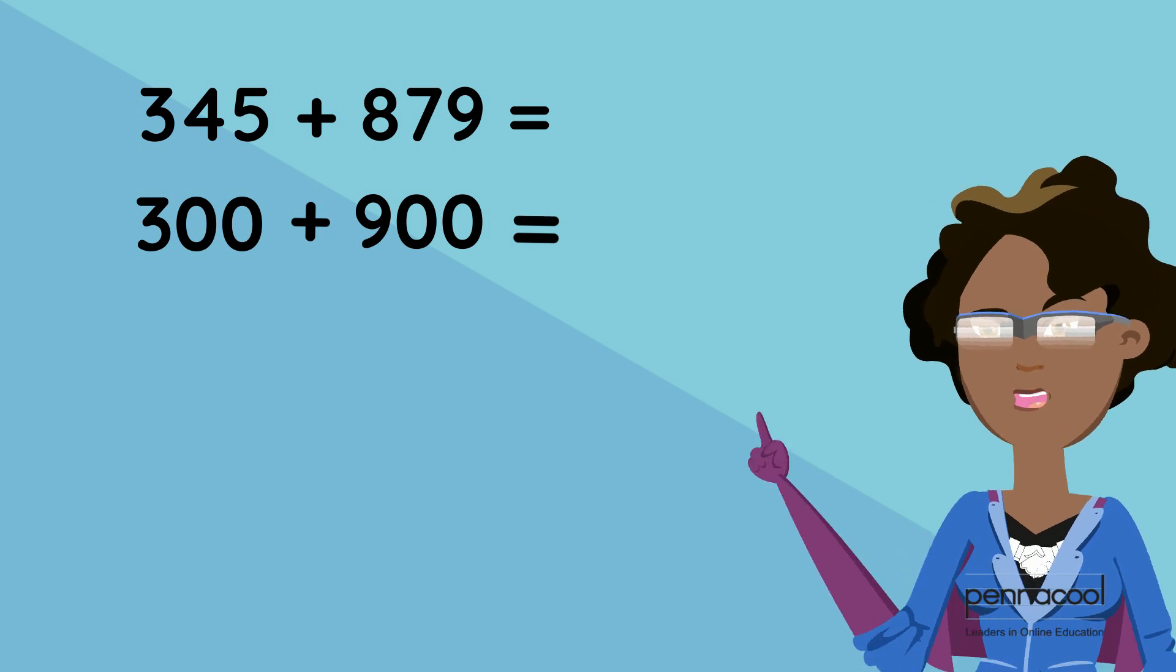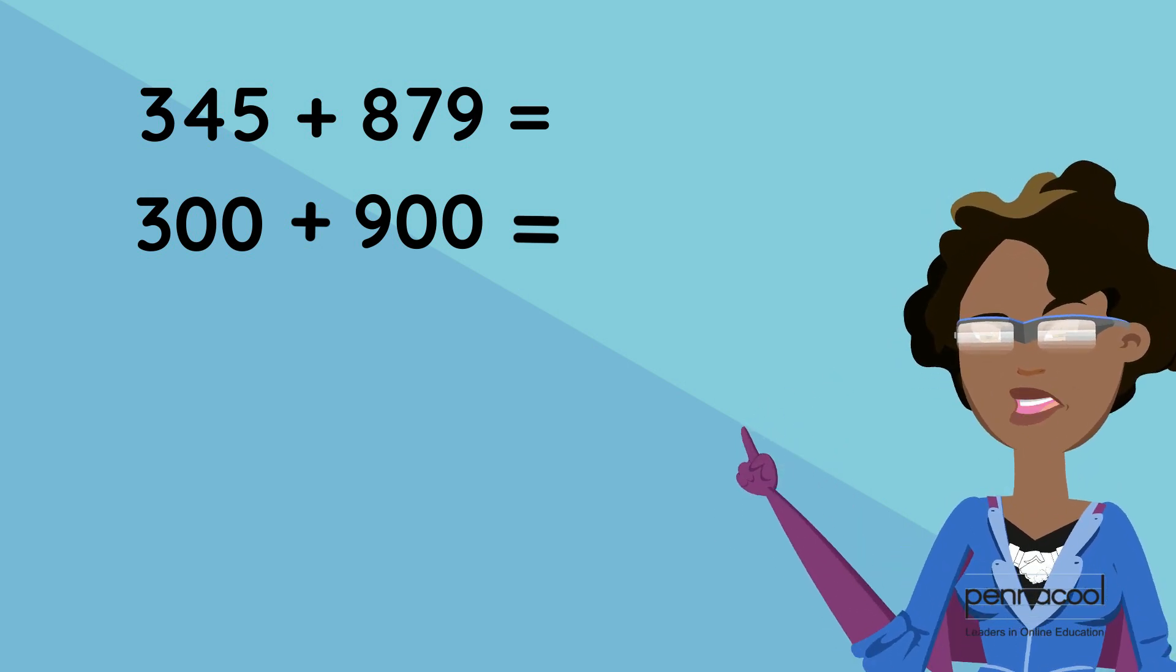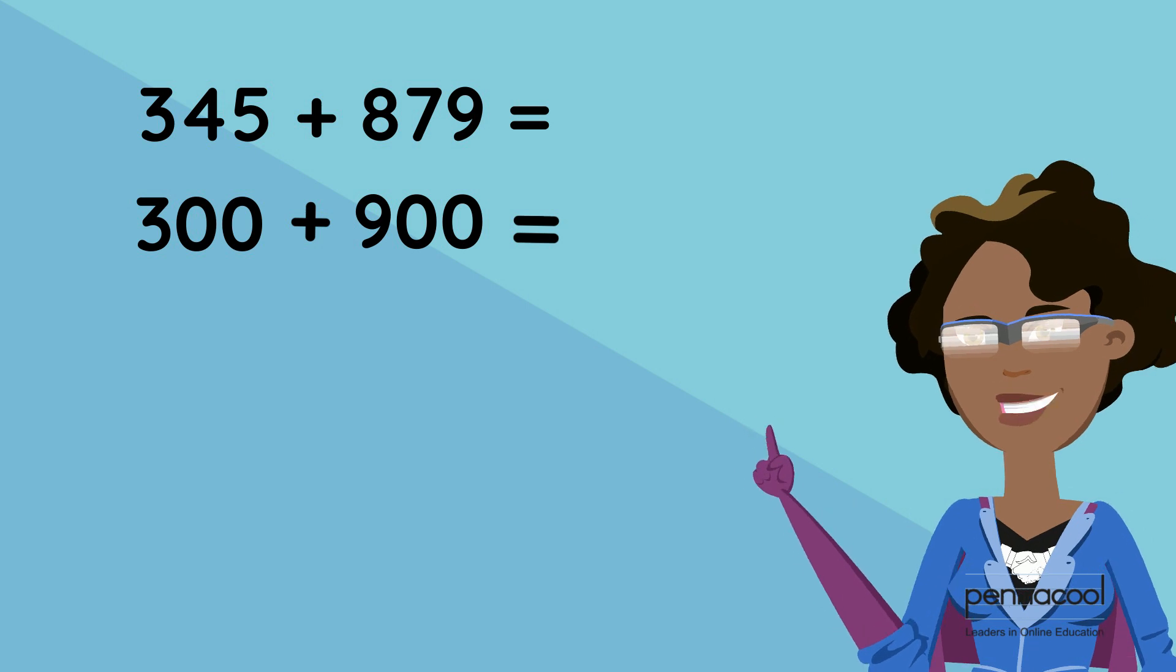Step two would be to add our rounded numbers together which are 300 added to 900. When we add these two together we get 1200.